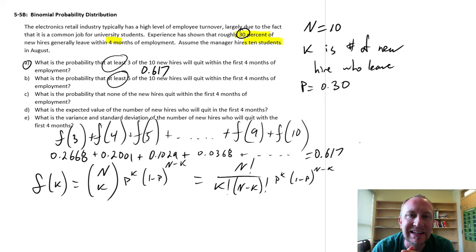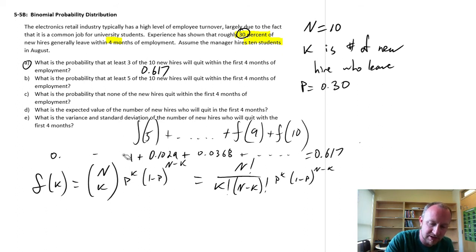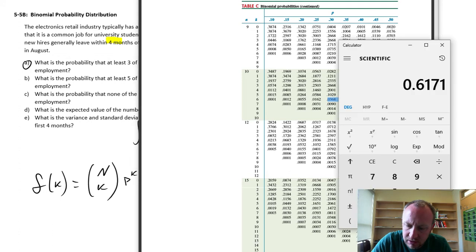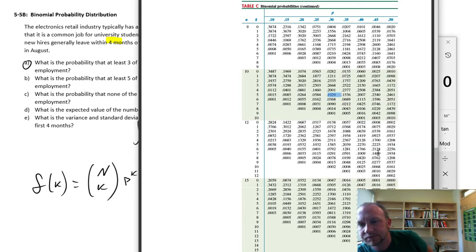What is the probability that at least 5 of the new hires will quit? So, it's really the same calculation, except now I'm not interested in probability of 3 or 4, now I'm just interested in the probability of 5, 5 or more. So, we can go through the same calculation, pull up my calculator here again, except now I'm going to start at 5, at least 5, so 5 or more.